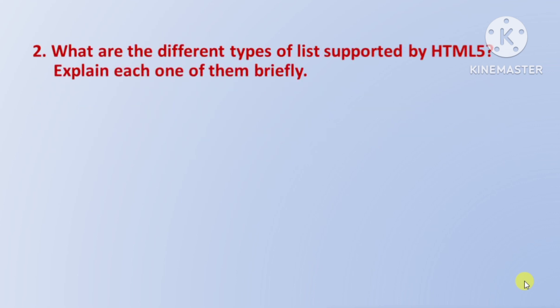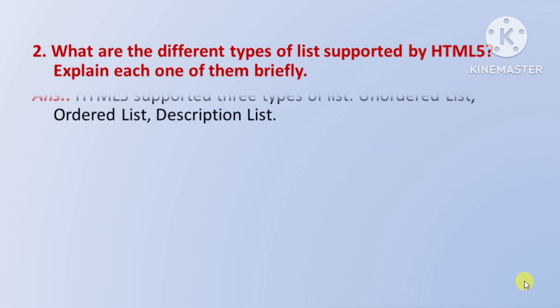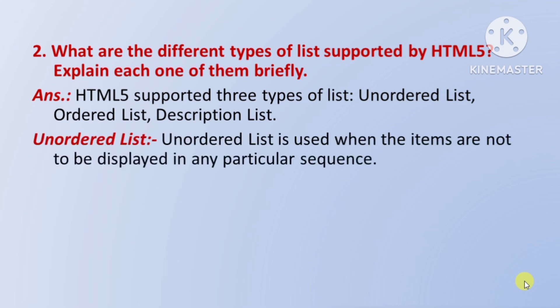Next question: what are the different types of lists supported by HTML5? Explain each one briefly. Answer: HTML5 supports three types of lists — HTML5 teen prakar ke list ko support karta hai: unordered list, ordered list, aur description list. Unordered list is used when the items are not to be displayed in any particular sequence — unordered list ka prayog hum tab karte hain jab hamen list of items ko kisi particular sequence mein display nahi karna hota.